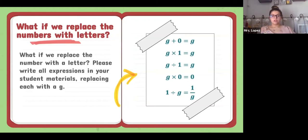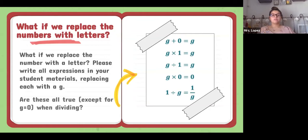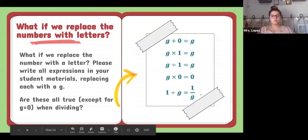Looking at these expressions, we know that if we replace G with the number zero it will not work for the last one. All of these are going to be true expressions except when G equals zero in the division case — G could be zero in the first four, but G cannot be zero in the last one because you cannot divide by zero.